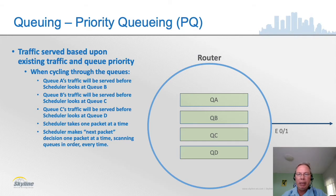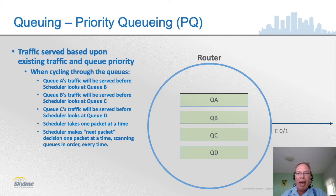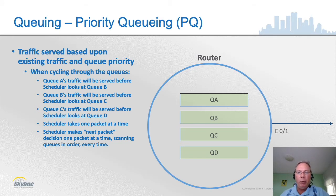That's when it goes to Queue B. The next time it needs a packet, it looks at Queue A again first, then Queue B. If there's nothing in Queue B, it moves to Queue C. This means it never takes a packet from Queue D unless there was nothing in Queues A, B, or C at all. This helped prioritize some data, but the problem was that traffic in Queue D might get served so seldom — because there's so much traffic in Queues A, B, and C — that it could never get through. That's what we call protocol starvation.